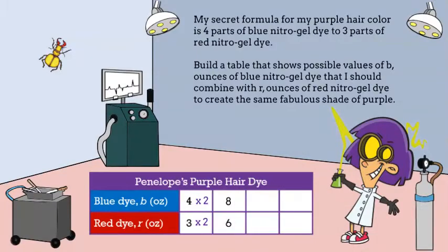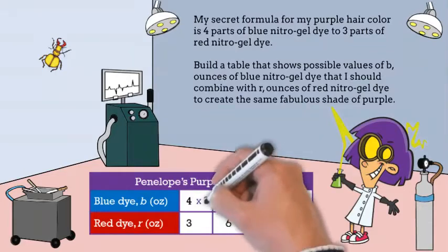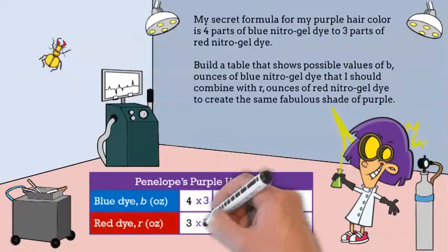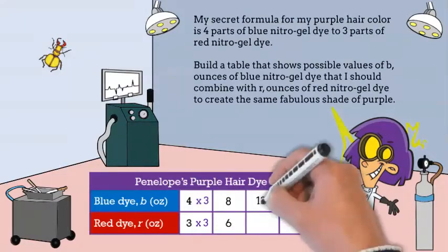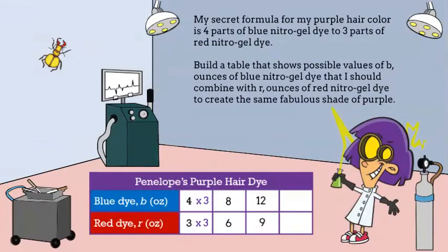If we want to continue, we go back to our initial ratio and we multiply the numerator and denominator by three. What do you get? That's right, you get 12 over nine.